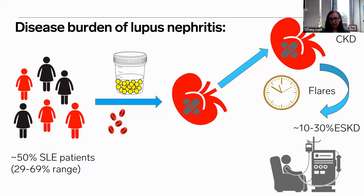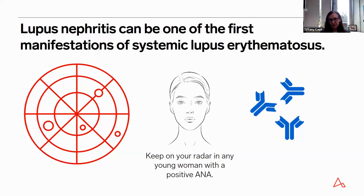Over time, lupus flares can lead to chronic kidney disease, and progressive disease activity can result in end-stage kidney disease. Approximately 10% of patients with membranous lupus nephritis, and up to about 30% for those with a proliferative component, will go on to end-stage kidney disease. Lupus nephritis could be one of the first manifestations of systemic lupus erythematosus, so when you diagnose a kidney biopsy with membranous nephropathy or proliferative immune complex glomerulonephritis in a young woman with a positive ANA, consider lupus.